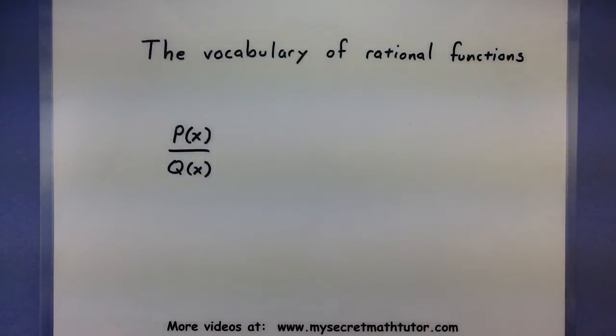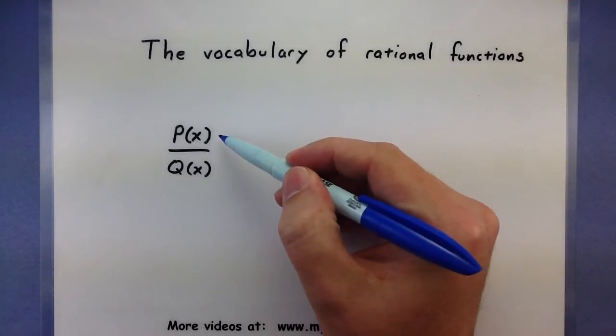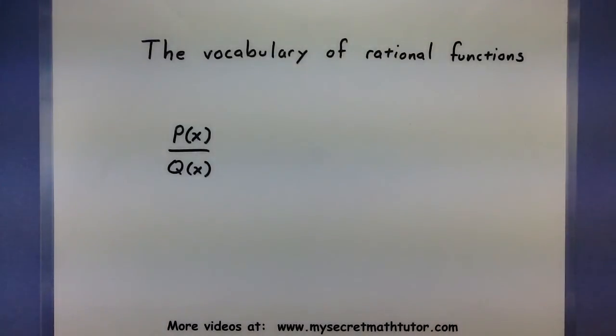So let's first start off with what is a rational function. To make a rational function, you start off with two functions, let's call them P and Q, and you divide them.